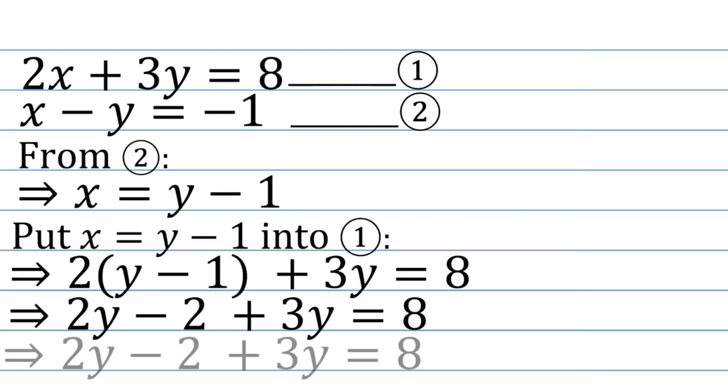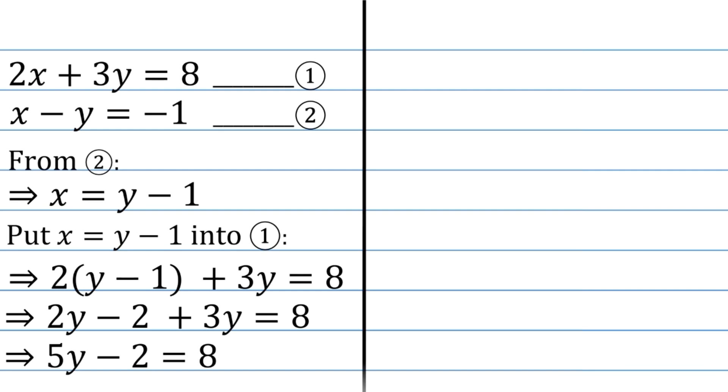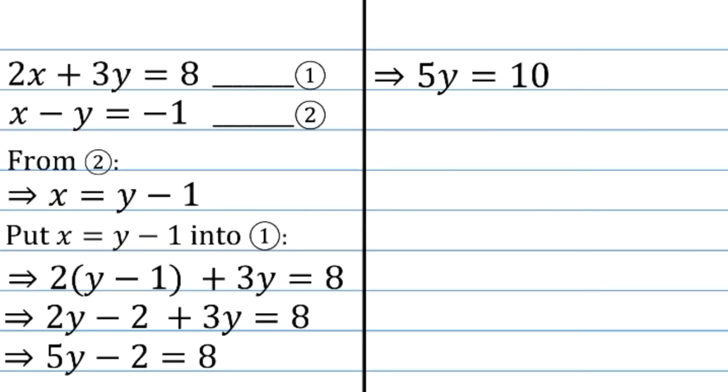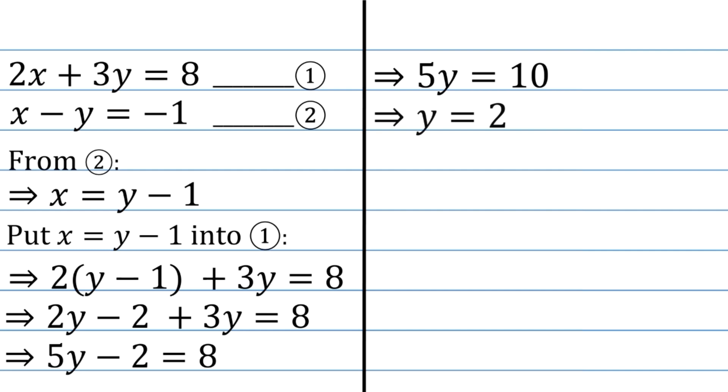Combining like terms on the left-hand side, we get 5y minus 2 equals 8. Adding 2 to both sides, we eliminate the minus 2, which implies that 5y equals 10. Now, we divide both sides by 5, and we get y equals 2.